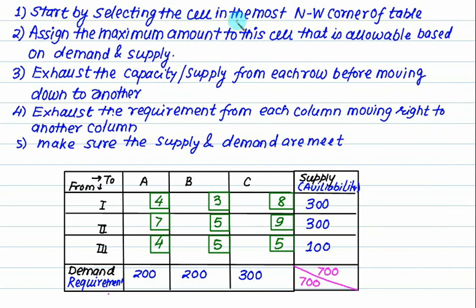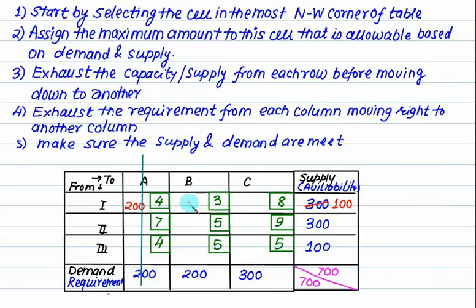Step one: start by selecting the cell in the most North-West corner. Check demand: 200. Check supply: 300. The lower value is 200, so allocate 200. Subtract 200 from supply — write 100 remaining — and make a cross on that column. Move along the row: maximum requirement is 200, but only 100 is available, so allocate 100. This reduces supply to 0 — cancel that row.